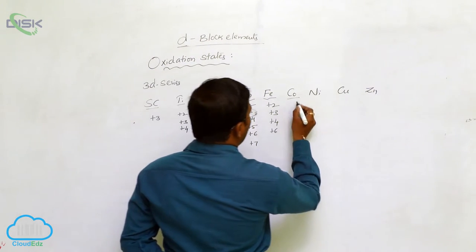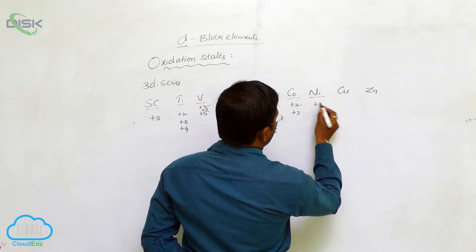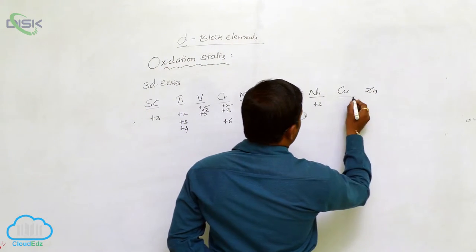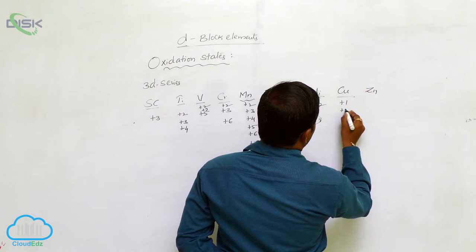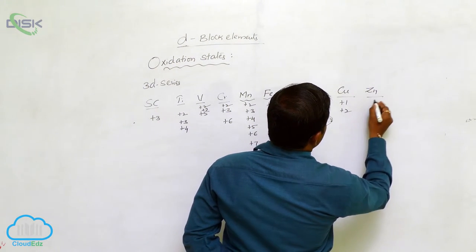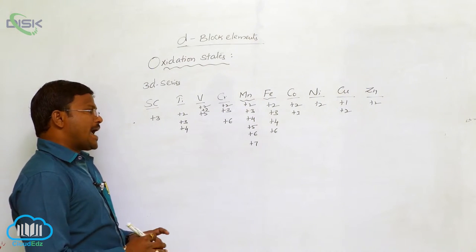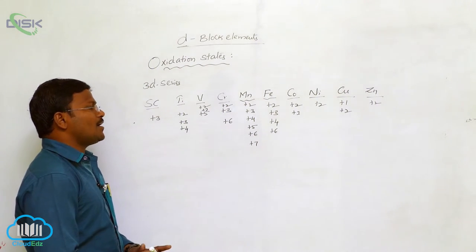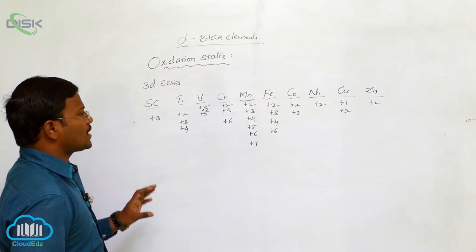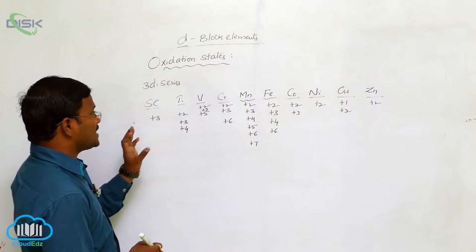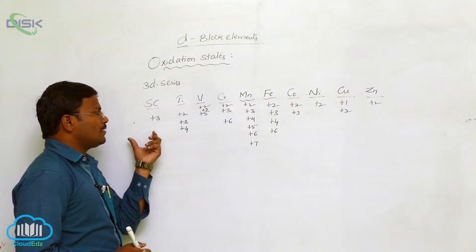For cobalt, plus 2 and plus 3 are the common oxidation states. For nickel, plus 2 and sometimes plus 4. For copper, plus 1 and plus 2. For zinc, plus 2. These are the expected oxidation states exhibited by d-block elements, or transition elements, especially 3D series elements.